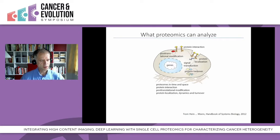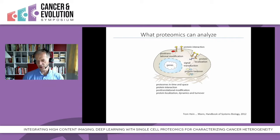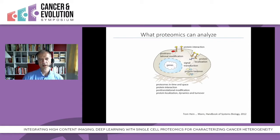Proteomics can, in principle — or that's the aim at least — look at proteins at a large scale and can look at also the modifications of proteins, where they are in the cell, and so on. I think the technological advances have been just as spectacular as in genomics. It just started from a much lower base, so it will take a while until we get to the numbers that you know from genomics.